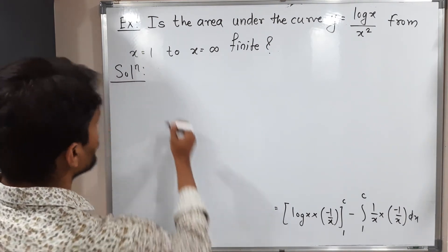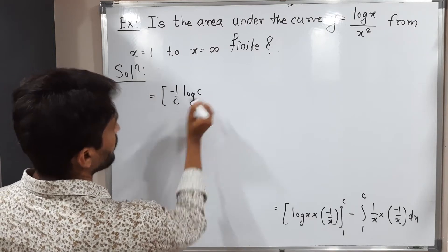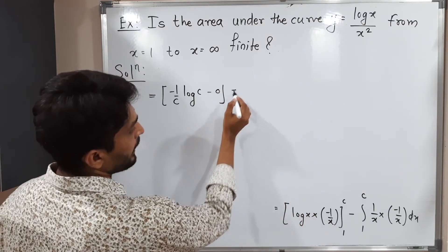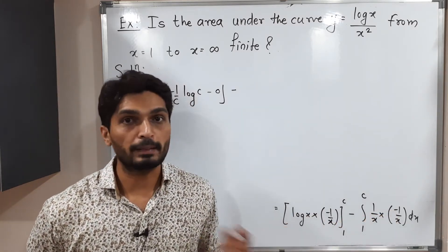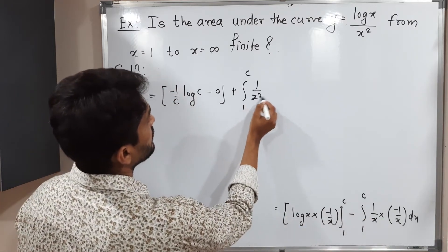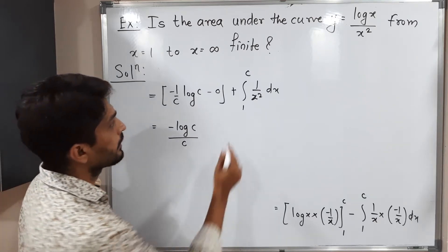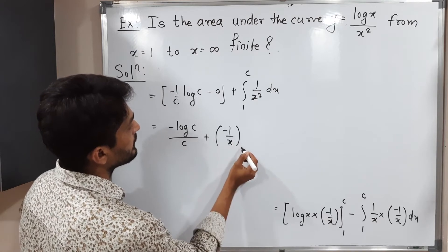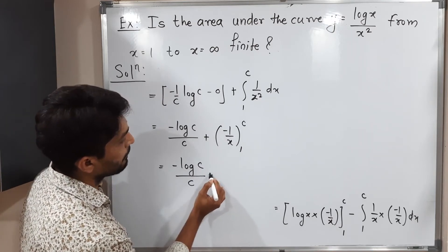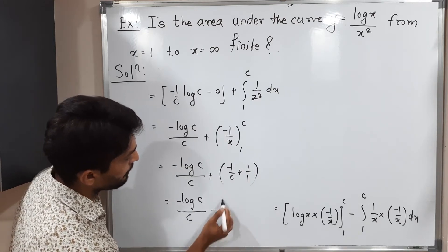Putting in the upper and lower limits: substituting c gives −(1/c)·log(c). Substituting 1, since log(1) = 0, that term vanishes. The minus signs combine: minus·(−1) becomes plus, so we get + integral from 1 to c of 1/x² dx. The integral of 1/x² is −1/x with limits 1 to c, giving −1/c − (−1) = −1/c + 1. Final answer: −log(c)/c − 1/c + 1.